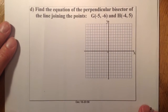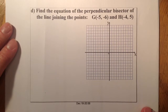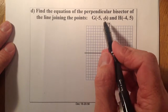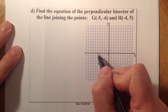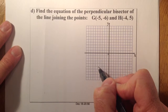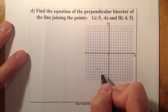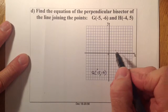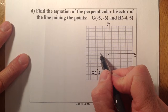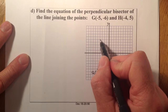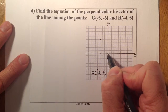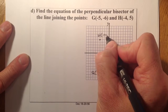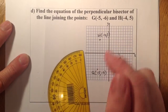Let's look at the last question in this perpendicular bisector work. Let's plot the points: G is at minus 5, minus 6, and H is at minus 4 and up to 5 — so that's point H at (-4, 5). Just draw that line up.